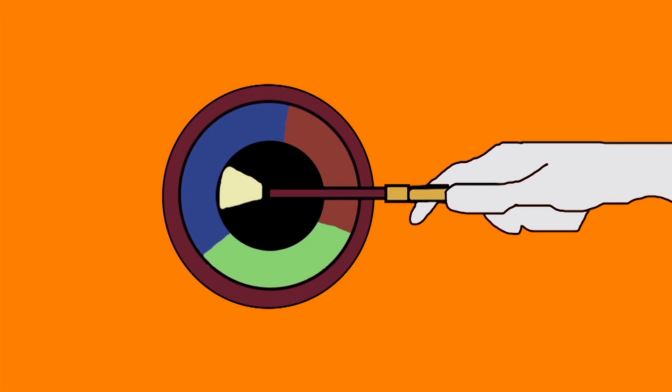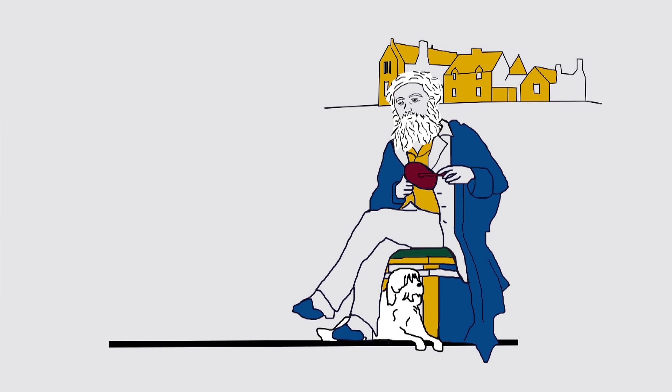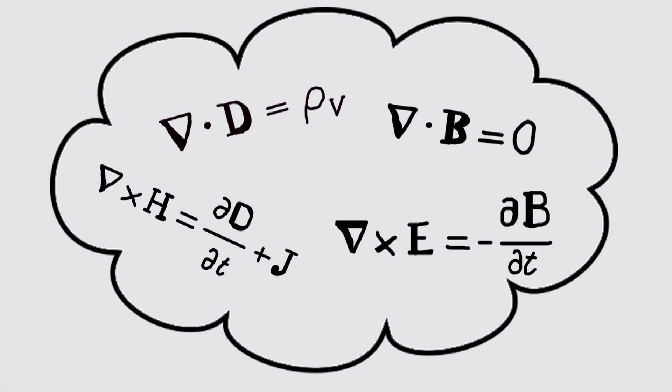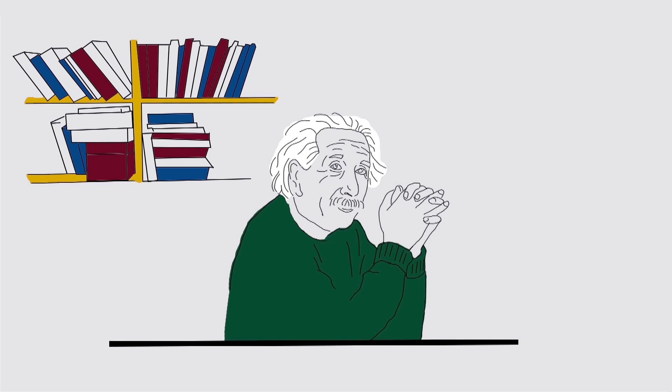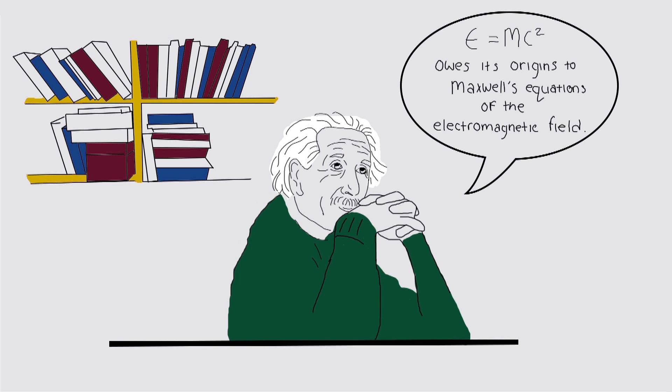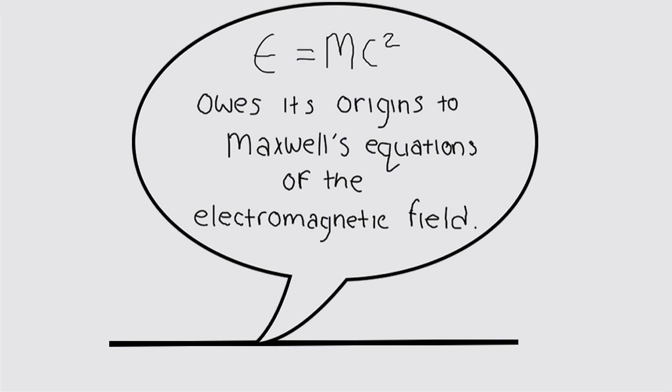He was always curious, questioning what's the go of that, and using maths to help us understand the world around us. Let's leave the last word to Albert Einstein: The special theory of relativity owes its origins to Maxwell's equations of the electromagnetic field.